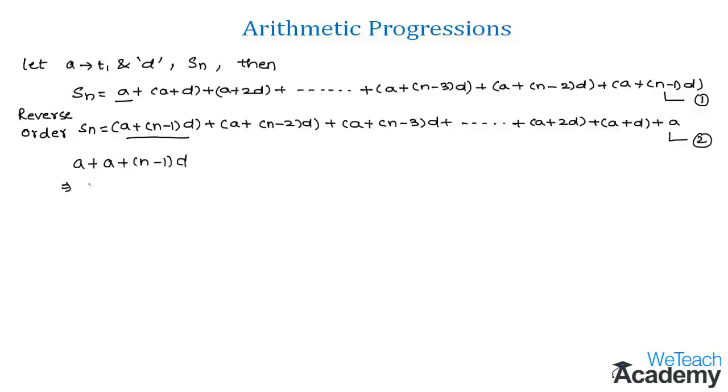So by adding this we get here a plus a as 2a plus n minus 1 into d. Similarly if we add all the remaining terms we get the same result, that is 2a plus n minus 1 into d.